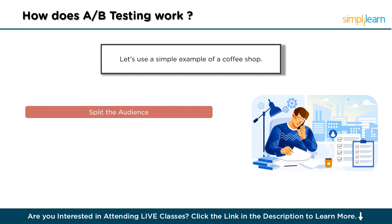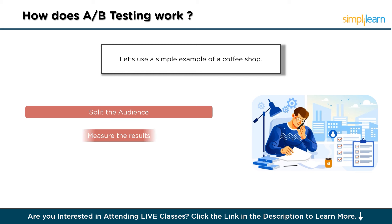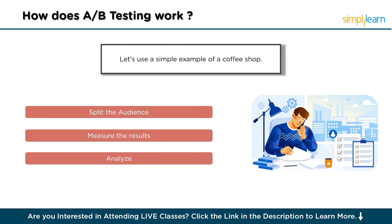Here's how the A-B testing process works. First, split the audience: the coffee shop displays Version A to half of its visitors and Version B to the other half — done on different days or in different locations to ensure a fair test. Next, measure the results: the shop tracks how many people sign up for the loyalty program after seeing each version. Then analyze: after a set period, the owner looks at which version led to more sign-ups. If Version B with the free coffee offer resulted in more sign-ups, that's a clear indicator that customers were motivated by the immediate reward.